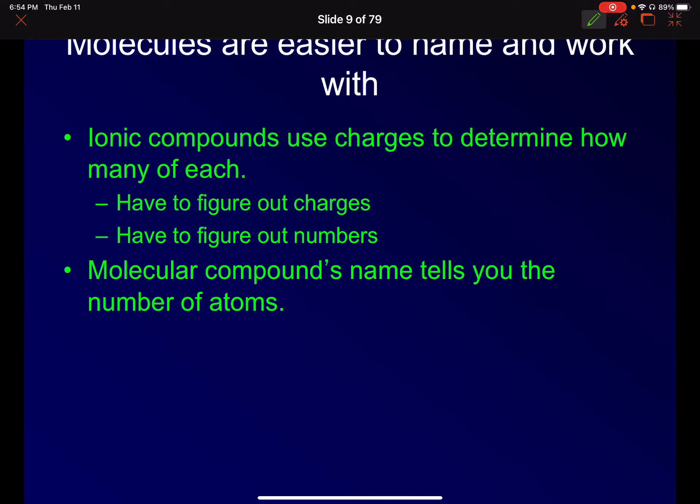In ionic compounds, as you guys know, we use the charge to determine how many of it we cross the charges and we figure out how much. It's like if I have potassium sulfate, the charge on the sulfate tells me that I need two potassiums. And so I know exactly how many of each I need in terms of ratio. So it's always going to be two to one, but it can be two million to one million, but it's two to one.